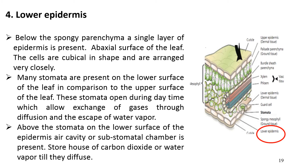Just above the stomata on the lower surface of the epidermis, an air cavity — also called the substomatal chamber — is present. This air cavity acts as a storehouse of carbon dioxide or water vapor until they diffuse.